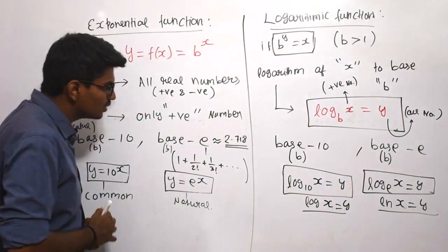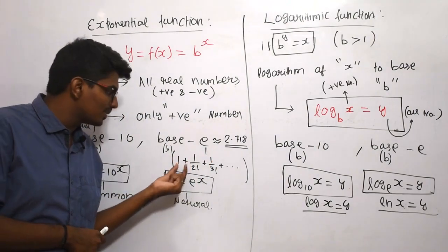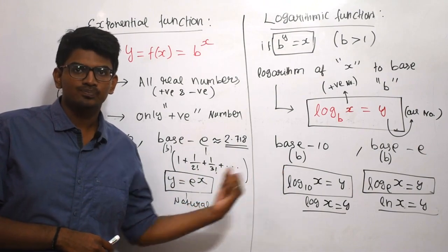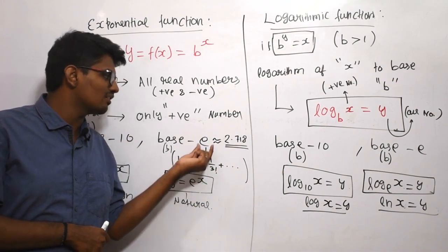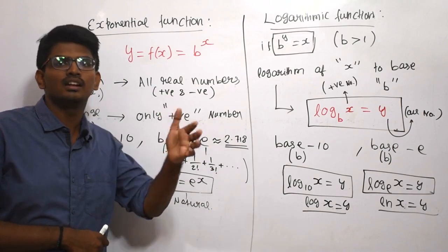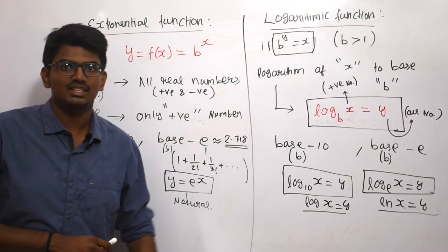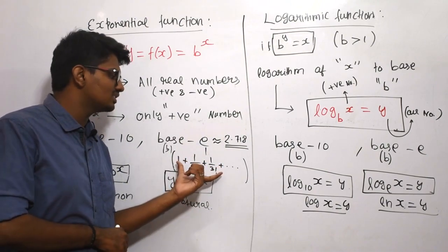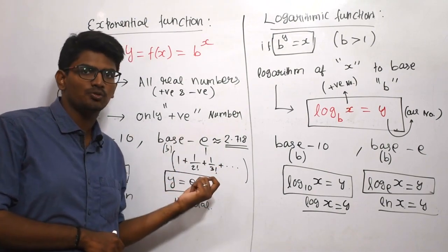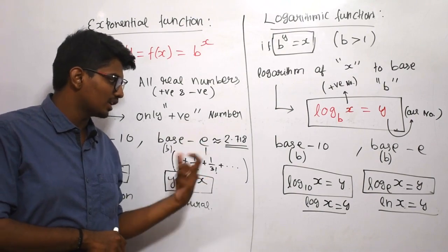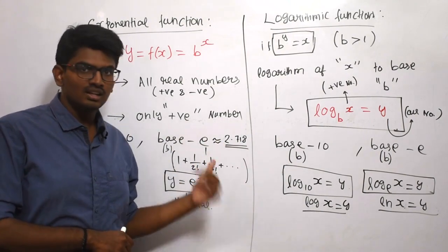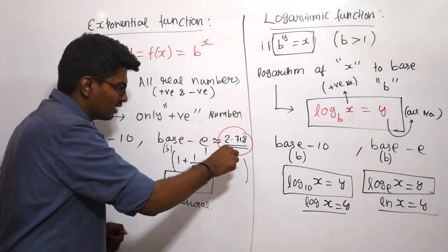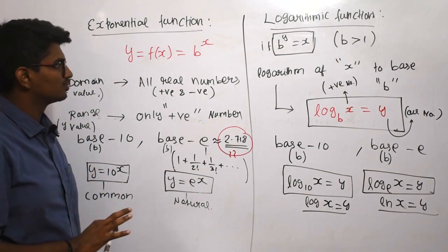What is this e? The value of e is nothing but 1 plus 1 by 2 factorial plus 1 by 3 factorial plus — it keeps on going. We will be deriving this when we enter into Taylor series in the calculus chapter. Once we enter into Taylor series, you will know how 1 plus 1 by 2 factorial plus 1 by 3 factorial plus 1 by 4 factorial equals e. The value of e is approximately equal to 2.718 — it is an approximate value, not exactly equal.